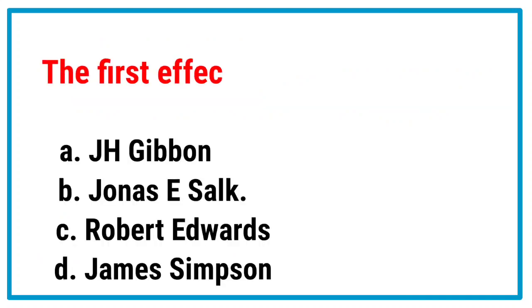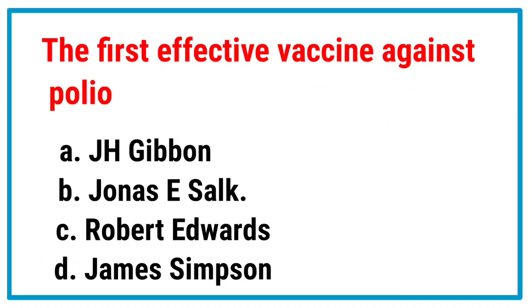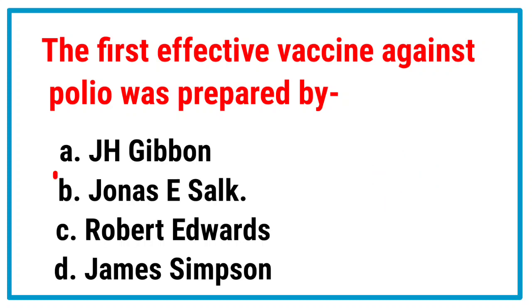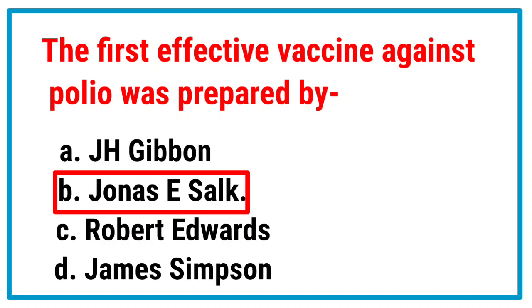The first effective vaccine against polio was prepared by whom? Correct answer is Jonas Salk.